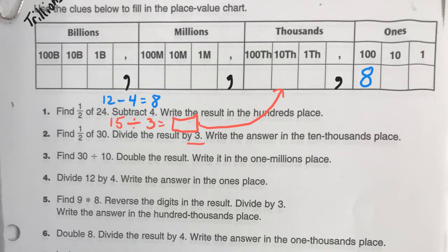Next one. I think you can do some of these on your own. So, you find 30 divided by 10, double it. That goes into the 1 millions place there.